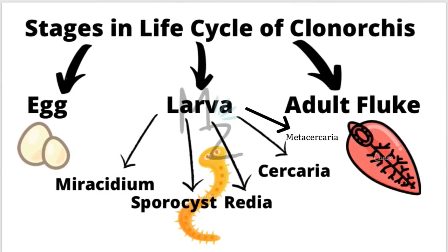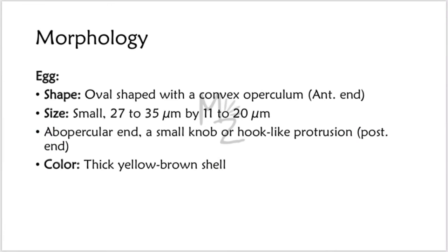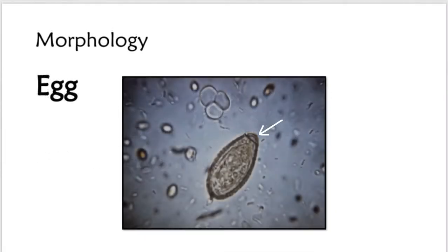There are three stages that exist in the life cycle of every trematode: egg, larva, and adult fluke. In Clonorchis, the larva exists in five stages: Miracidium, Sporocyst, Redia, Cercaria, and Metacercaria. The egg is oval-shaped with a convex operculum at its anterior end. It is small — 27 to 35 micrometers by 11 to 20 micrometers. The posterior end has a small knob or hook-like protrusion. The shell is thick and yellow-brown in color.